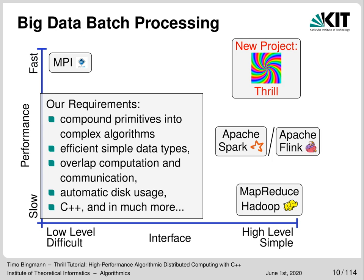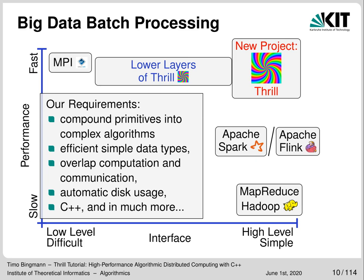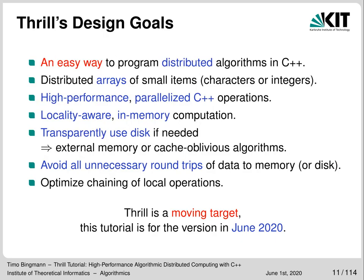We had really high goals, and much work was concentrated on what I call the catacombs — the lower layers of Thrill — which are needed to build up from MPI or another communication layer. The overarching main goal was to have an easy way to program relatively complex distributed algorithms using C++. Thrill is obviously a moving target, and this tutorial was recorded in June 2020.